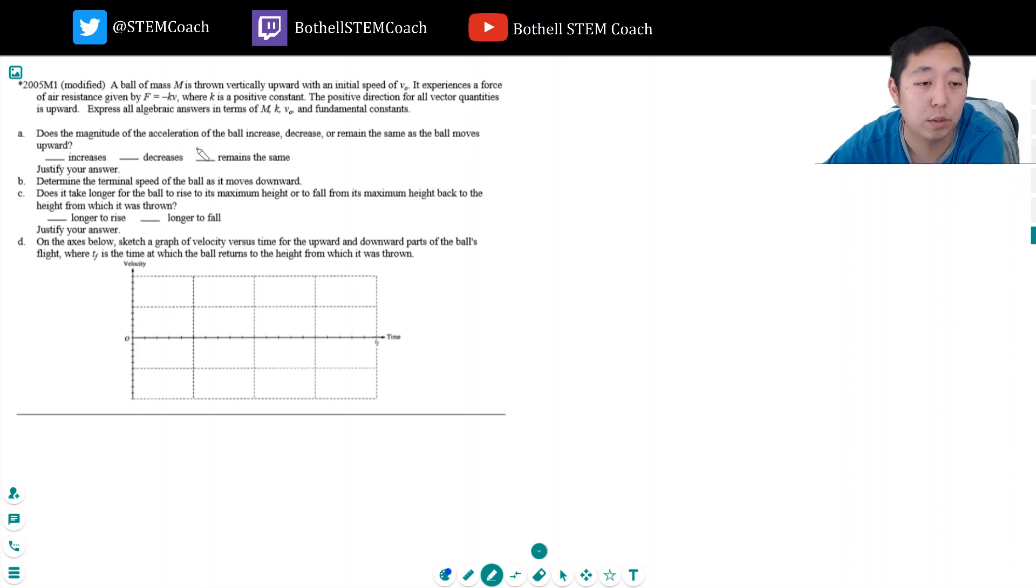Does the magnitude of the acceleration of the ball increase, decrease, or remain the same as the ball moves upward? So let's take a look at what's acting on this ball. I have capital MG, gravity. This is constant, no matter where we are. We basically assume it's constant because we're not going really far away from the earth. And the other force is the drag force, kv.